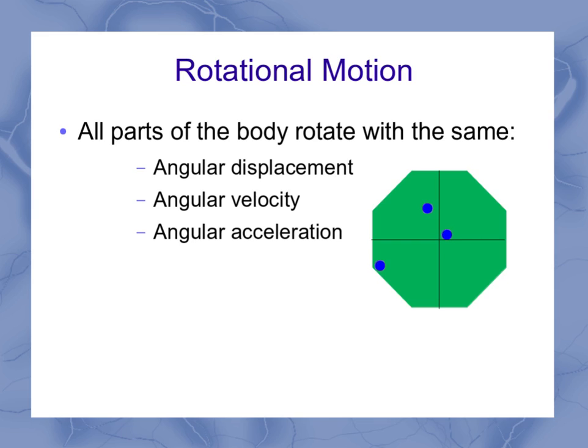If it didn't, the object would get twisted up. So the linear quantities are not the same, but the angular quantities are the same. Not that they're the same as each other, but the angular displacement for every dot is the same. And the angular velocity for each dot is the same as all the other angular velocities.